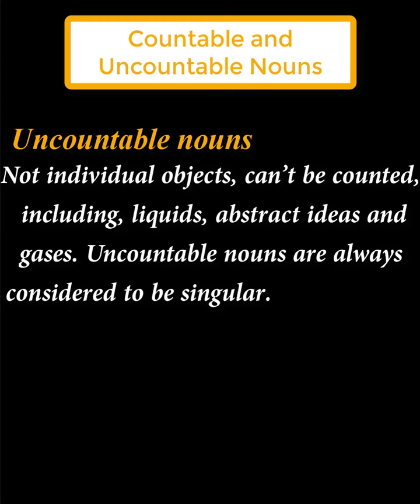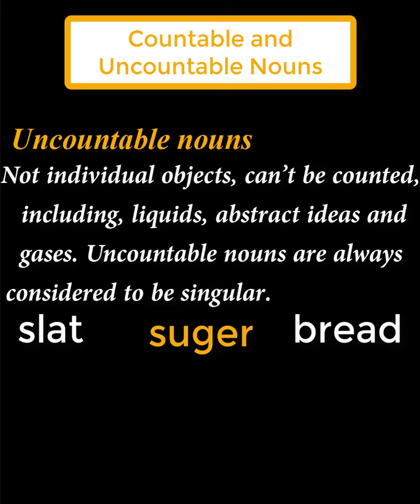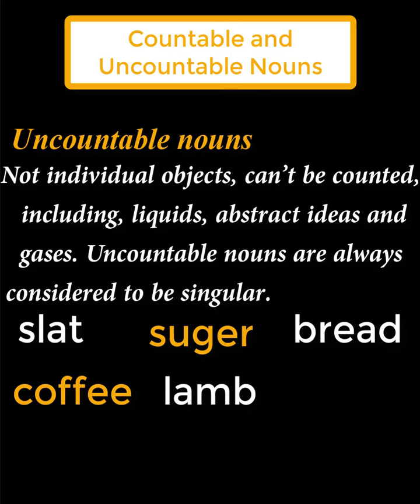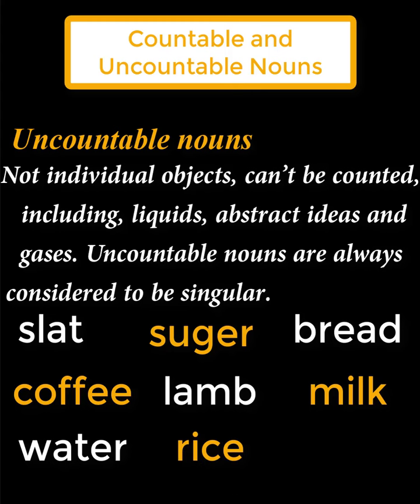Uncountable nouns: it's not individual objects — can't be counted, and always considered to be singular. هي أسماء تدل على أشياء لا يمكن عدها، مثل السوائل والغازات والمعرفة والأفكار. Salt — ملح: ذرات بسيطة صعب عدها، لذلك لا تجمع وتعامل كالمفرد. نقول: there is some salt، there is some sugar، there is some bread، there is some coffee، there is some milk، there is some water، there is some rice.